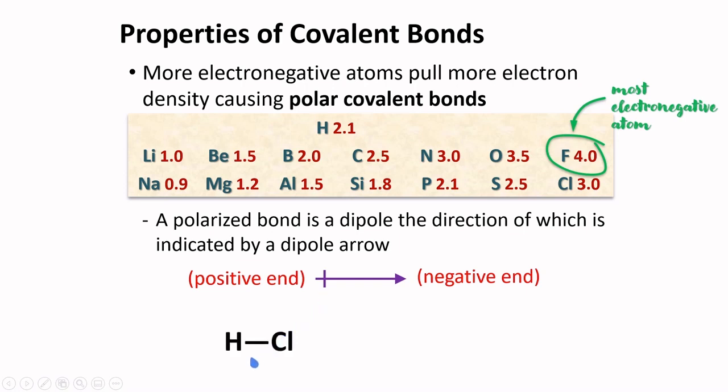The bond between hydrochloric acid is polarized because chlorine is more electronegative than hydrogen. In this case, we will have this dipole arrow moving towards the direction of chlorine. Hydrogen will have a partial positive charge and chlorine will have a partial negative charge.